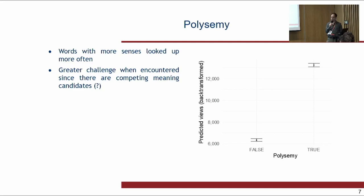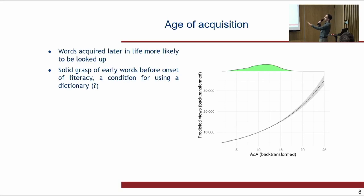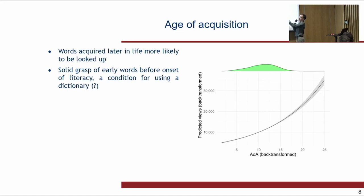For polysemy, words with more senses are looked up more often — we also showed this for the German dictionary. We interpret this as a greater challenge when encountering polysemous words because of competing meaning candidates, making it necessary to look them up. For age of acquisition, words acquired later in life are more likely to be looked up. You first need a solid grasp of early words before the onset of literacy — a precondition for using a dictionary at all.